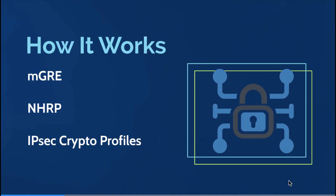Let's talk about the components that make it a reality. We are dealing with something that layers technologies on top of themselves to give us a solution. The three specific technologies working together — with an argument for a fourth in a moment — include multi-point GRE. We are used to creating GRE tunnels where we specify a source and a destination, but in the multi-point GRE world, we specify the source while the destination is a dynamic ingredient.